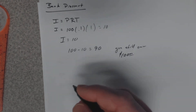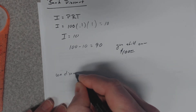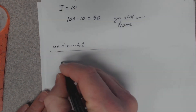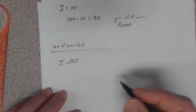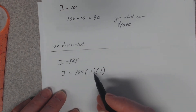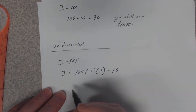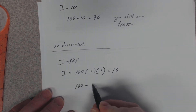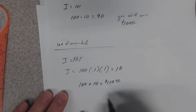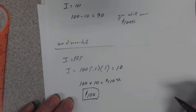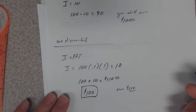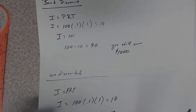An undiscounted note doesn't work that way — this is what most people think of when they think of loans with simple interest. Same scenario: $100 at 10% times one year equals $10. You owe $100 plus $10, so you owe $110. You walk out of the bank with $100 in your pocket and at the end of the year you pay back $110.